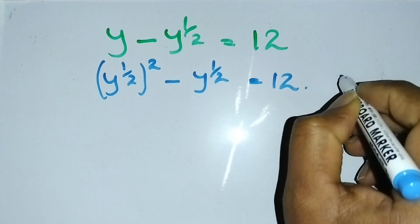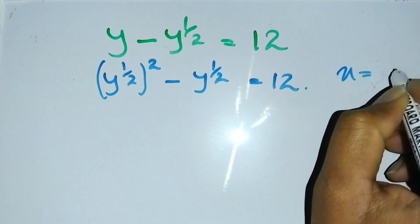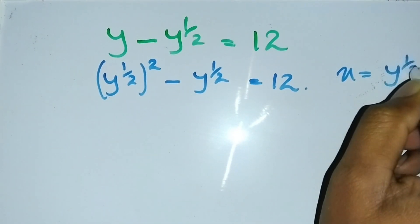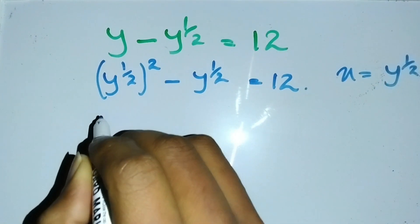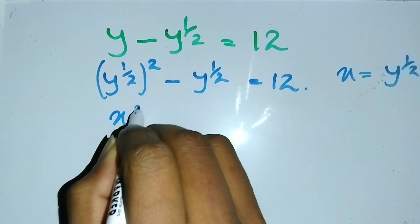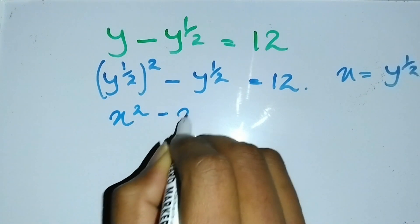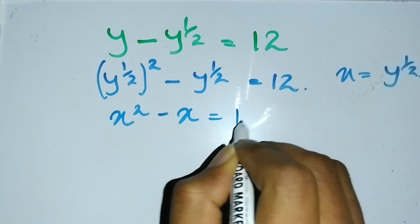Then I can rearrange or rewrite this expression as x^2 - x = 12.